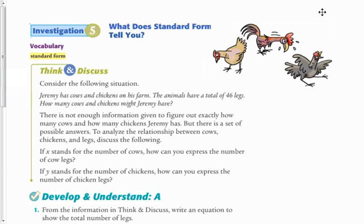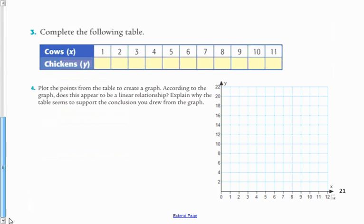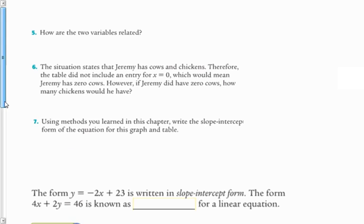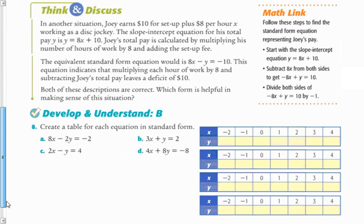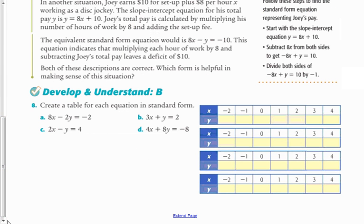Hey students, this is lesson 1-3-5. What we're going to do is find out about a different form of a linear equation called standard form. We're going to learn how to recognize standard form and how it's related to the slope-intercept form. I'm going to skip to page 22, the bottom of page 22, and start by doing a problem where we look at a table.